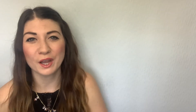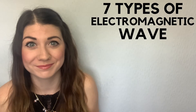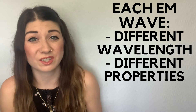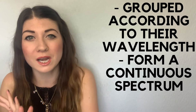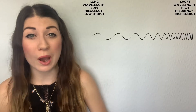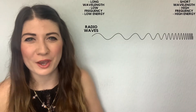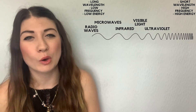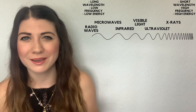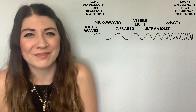We have an electromagnetic spectrum with all seven different types of electromagnetic waves on it. Each EM wave has a different wavelength and different properties, so they're grouped according to their wavelengths, but they actually form one long continuous spectrum. At one end, with the long wavelength, low frequency, and low energy, we have radio waves. These then turn into microwaves, then infrared, then right in the middle visible light, then ultraviolet, then X-rays, and finally at the end with the shortest wavelength, highest frequency, and highest energy, we have the gamma rays.